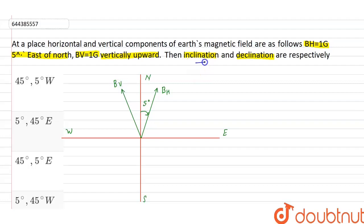We know that magnetic inclination or angle of dip, Theta equal to tan inverse BV divided by BH. BH is equal to 1G, and this 1G is equal to 10 to the power minus 4 Tesla.